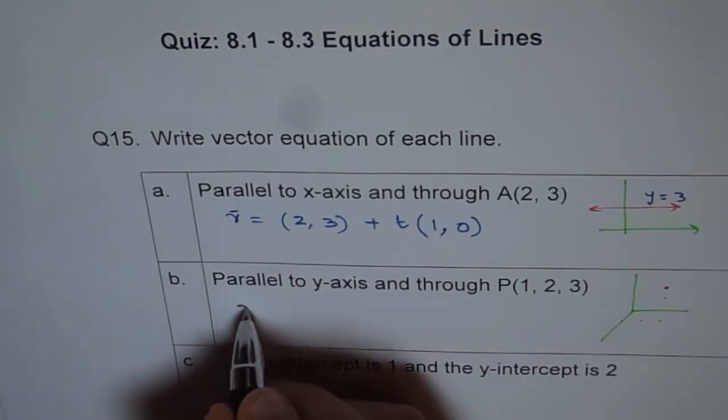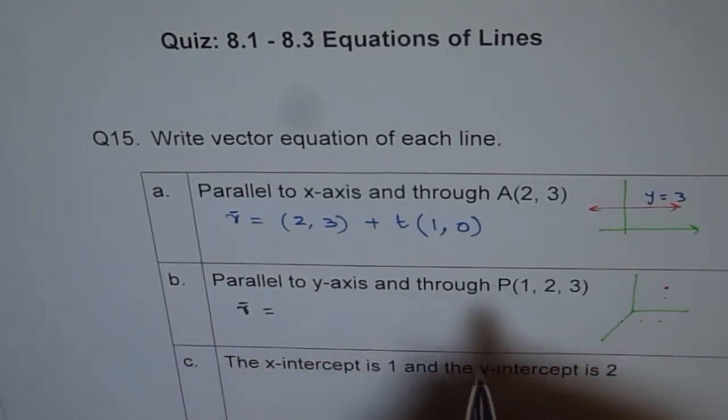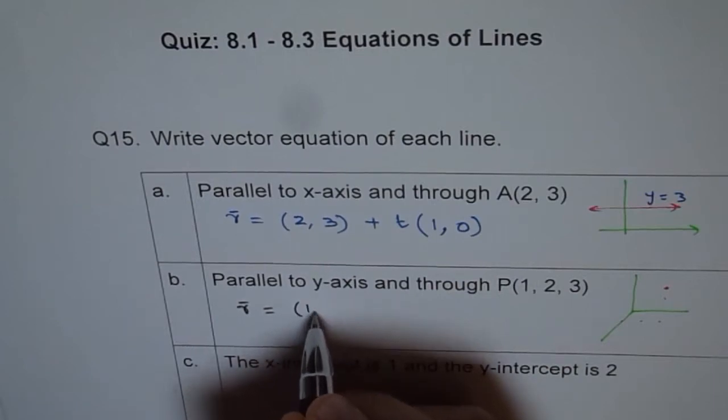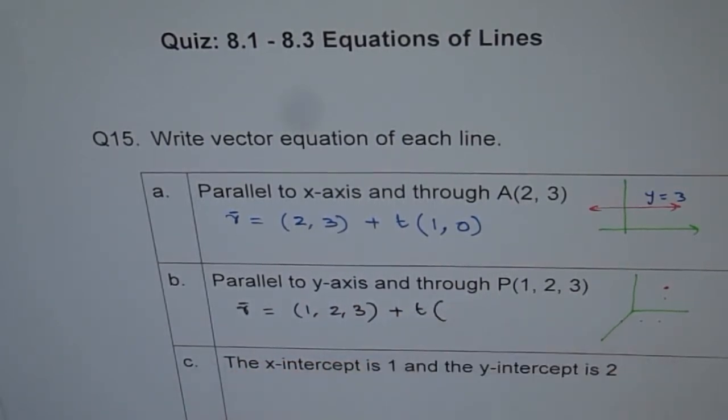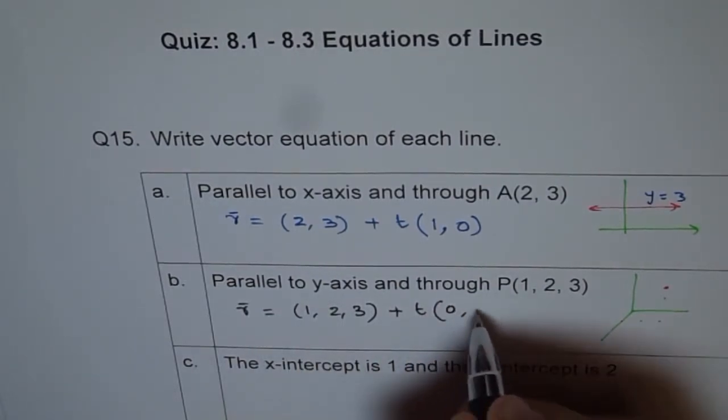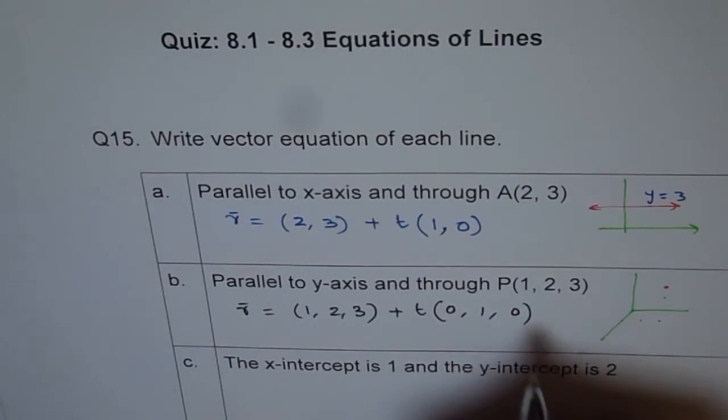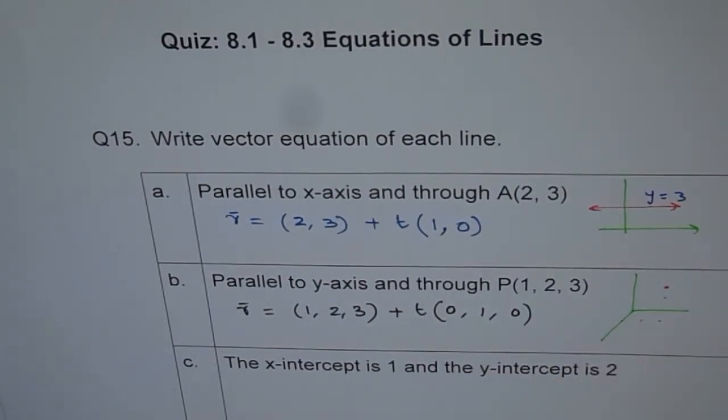Here the vector equation of the line will be equals to the point 1, 2, 3 plus t times. What is 1? y value. Parallel to y-axis and others are 0. Then it becomes parallel to y-axis. That is how we have to write our equations for this.